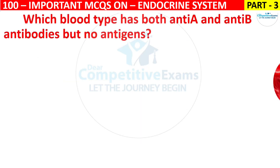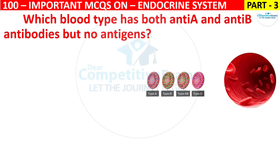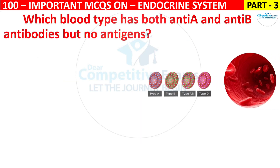Which blood type has both anti-A and anti-B antibodies but no antigens? Your options are Blood type A, Blood type B, Blood type AB, or Blood type O.